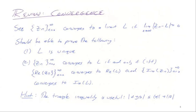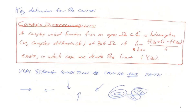I'm assuming everybody remembers basic convergence. We say a sequence z_n converges to a limit L if, as n→∞, |z_n − L|→0. Key facts include: the limit is unique, and a sequence converges to L if and only if the real part converges to Re(L) and the imaginary part converges to Im(L). Since we only have an hour, I won't give full proofs, but will give sketches. Details are on the slides.